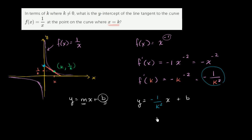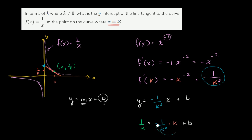So how do we solve for b? We know what y is when x is equal to k — y is equal to 1 over k when x is equal to k. So substituting in: 1 over k equals negative 1 over k squared times k, plus b. Now, k over k squared is the same thing as 1 over k, so this simplifies to negative 1 over k plus b. So all of this simplifies to negative 1 over k.